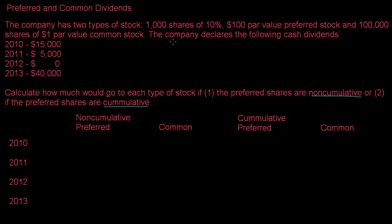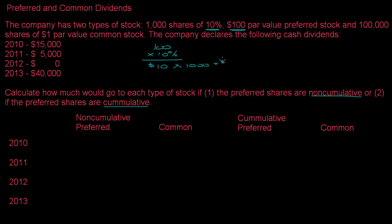The first thing I like to do when doing a problem like this is figure out how much the preferred shareholders should get per year. This is based off the interest rate on the preferred stock — in this case 10% multiplied by the par value of the stock. So $100 times 10% gives us $10 per share, and $10 per share times 1,000 shares equals $10,000.